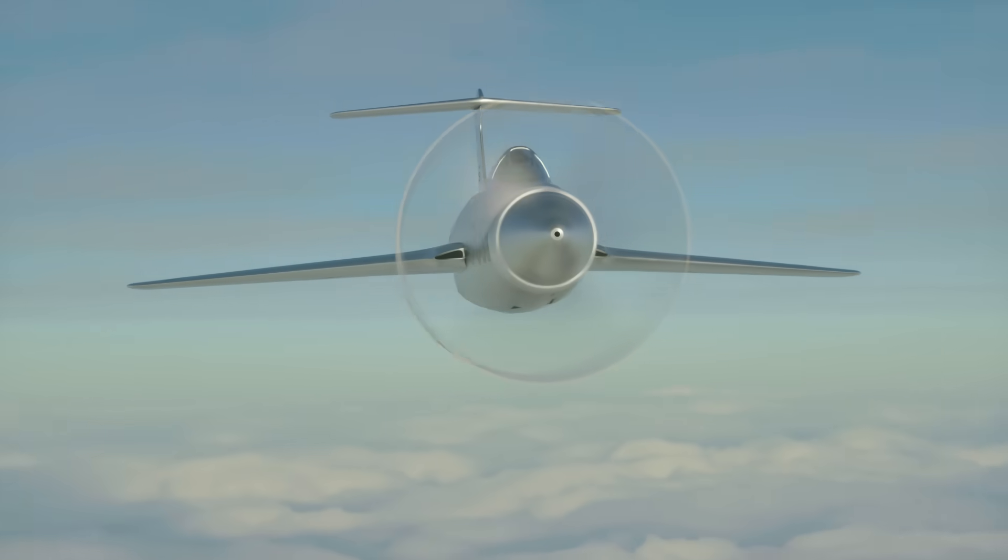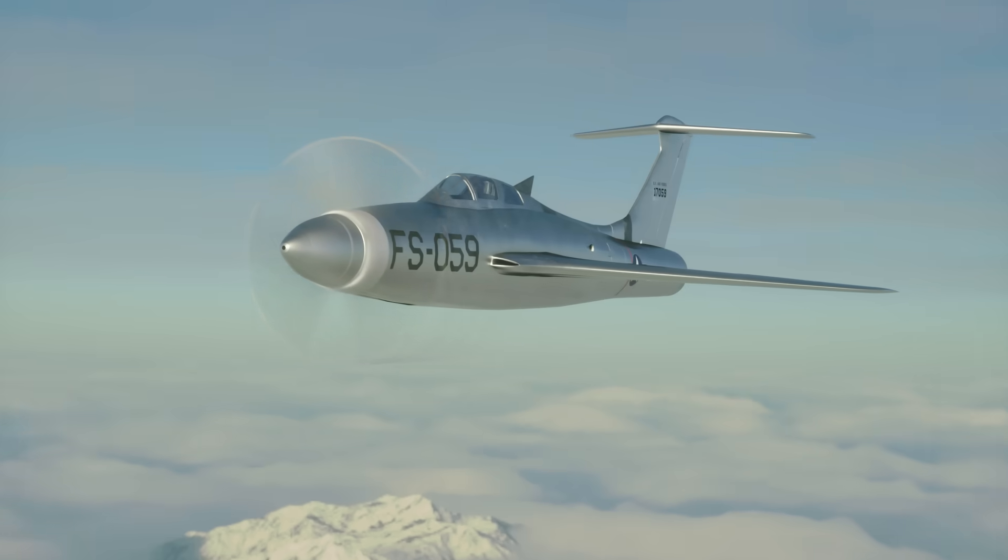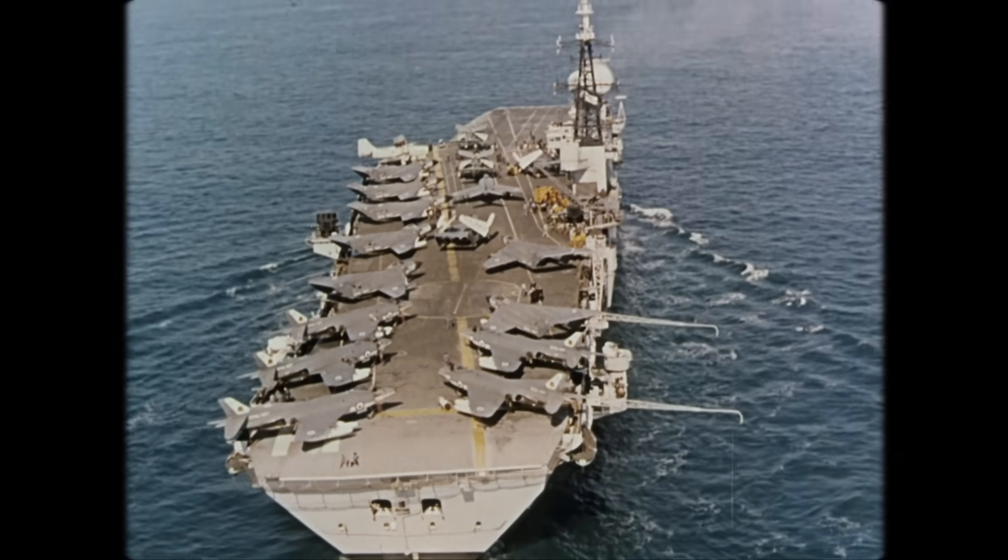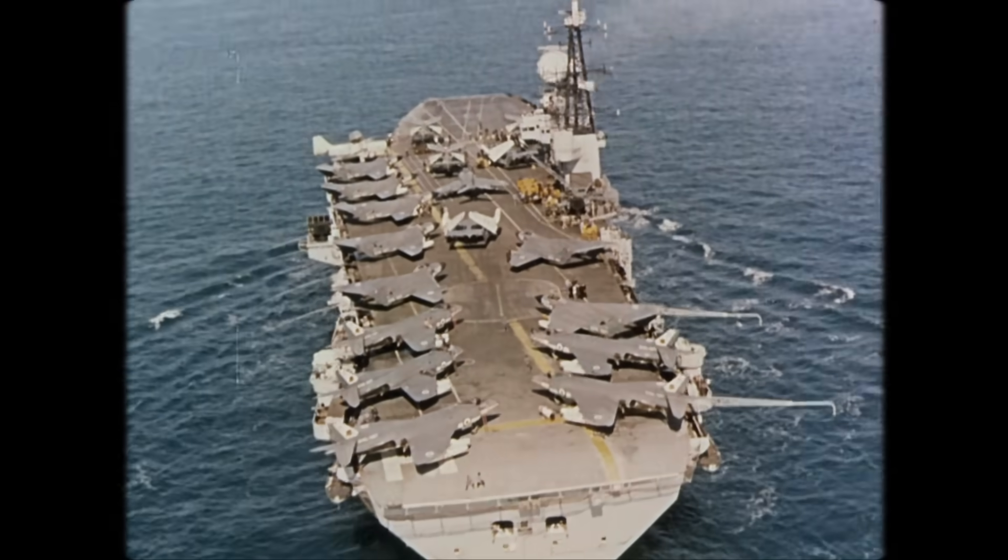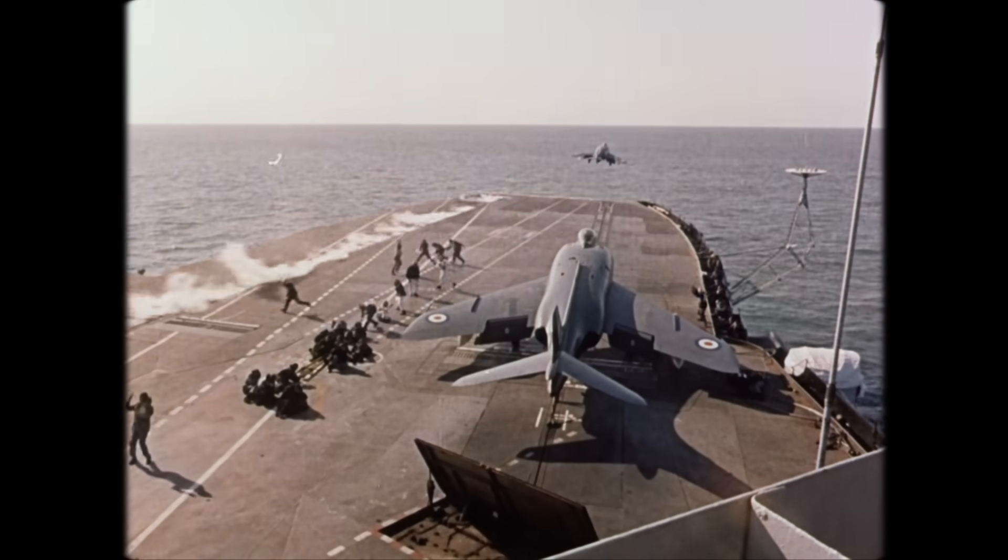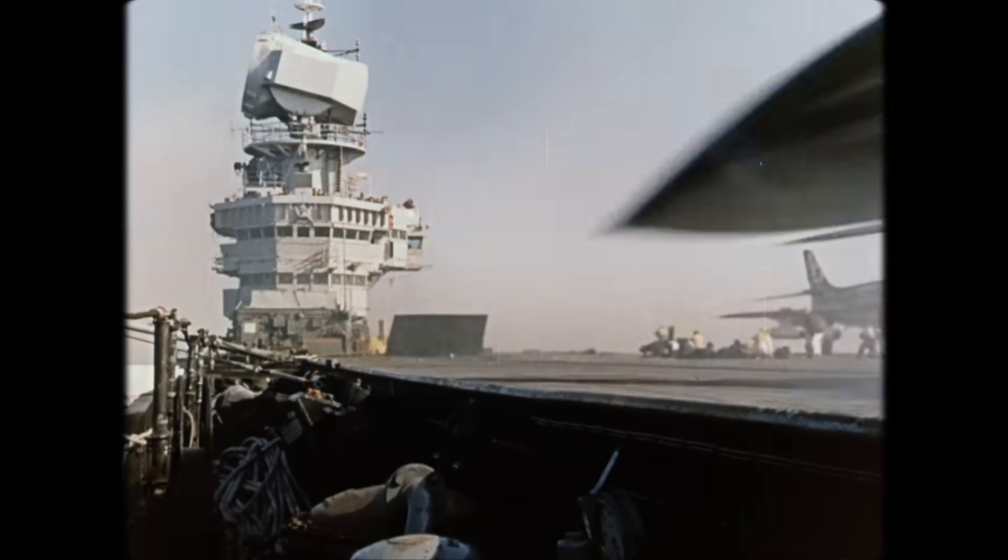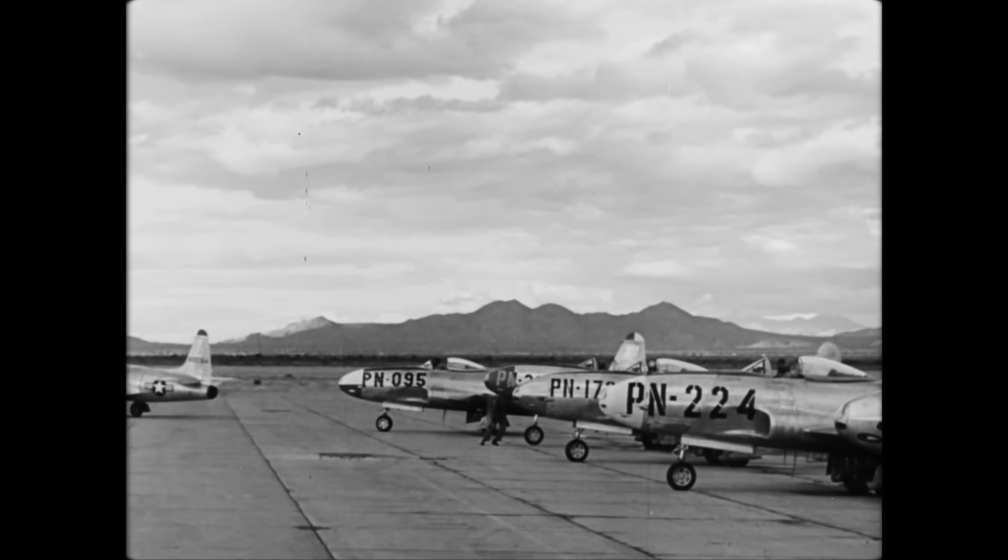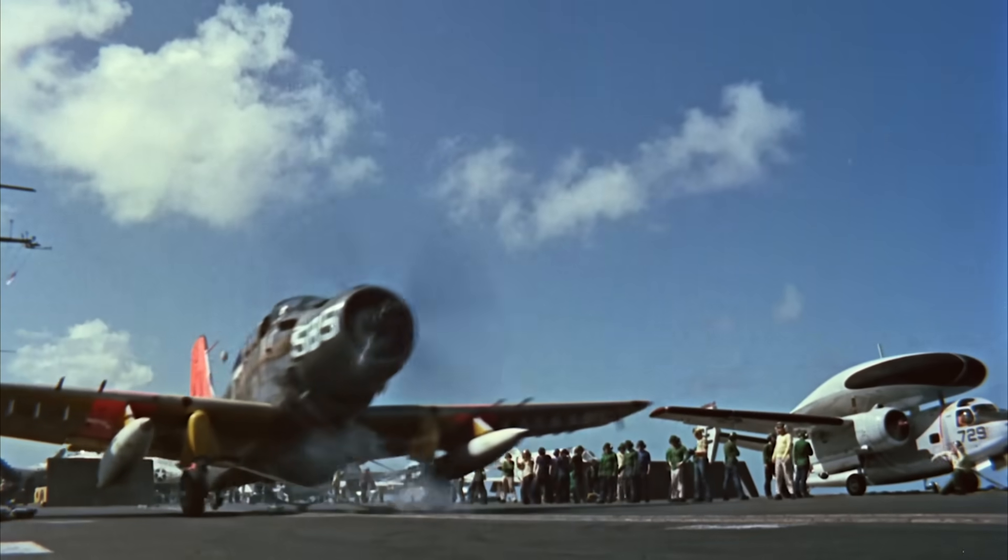The Thunderscreech was a unique plane, born out of a unique need during the early development years of the jet engine. The Navy needed aircraft with short takeoff runs, so they could take off from aircraft carrier runways to give them a competitive advantage near enemy territory. This required something called climb performance, which jets at the time were not particularly good at. The propeller planes of World War 2 were superior. The propeller design allows these aircraft to take off from aircraft carriers with much shorter runways and climb faster.